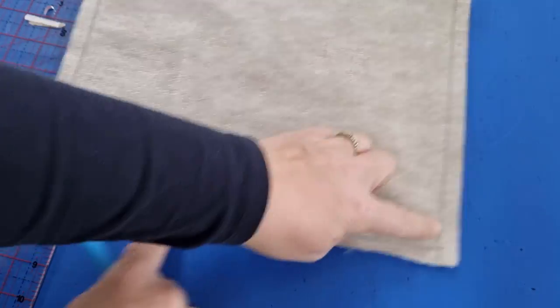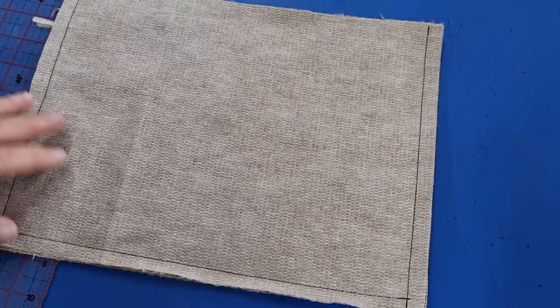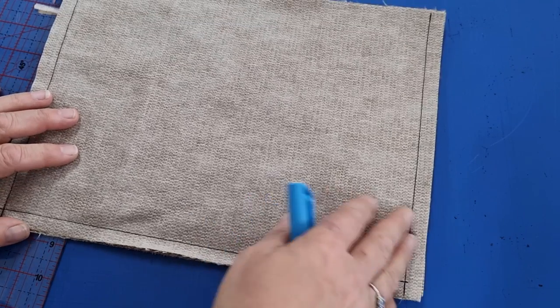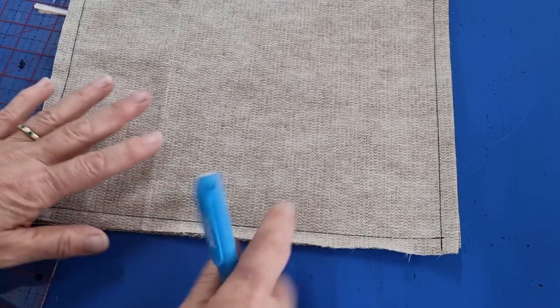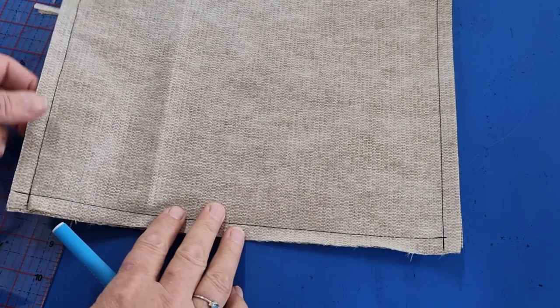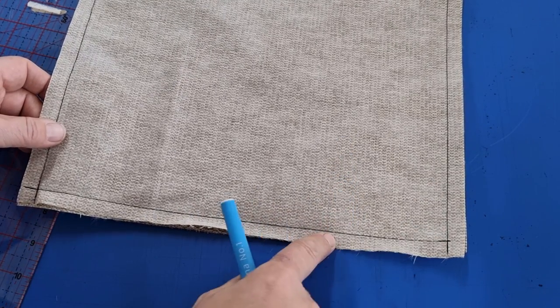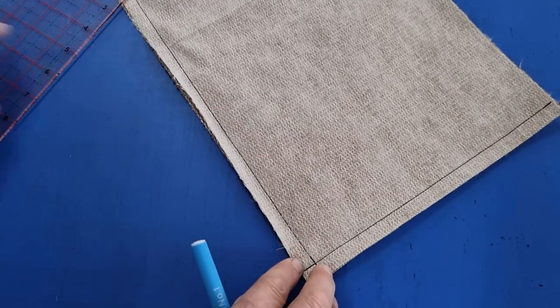All right, so my seams are all a half inch seam allowance. Now when you're doing boxed bags, it really doesn't matter what your seam allowance is. It can be a quarter of an inch, it can be an inch if you wanted to. It's absolutely up to you, but when you're working out what your corners are, it's important that you actually use your seam allowance as your guide for boxing your corners.